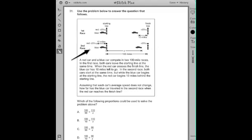Number 31: Use the problem below to answer the question that follows. They show us two pictures here, race one and race two. The red car and a blue car start here. Looks like the red car finishes first and the other car is missed by 10 miles. Race two: red car starts back 10 miles, blue car starts at the start, they go again.